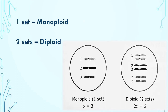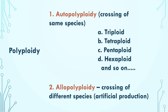Euploidy can be of various types. When there is presence of a single set, that is known as monoploid. When there are two sets of chromosomes, that is known as diploid. When there is presence of more than two sets of chromosomes, those are known as polyploid, and the phenomenon is known as polyploidy.